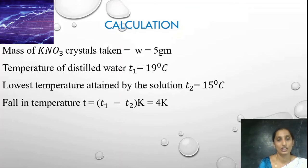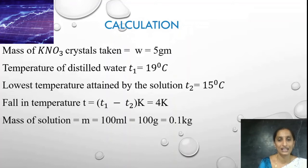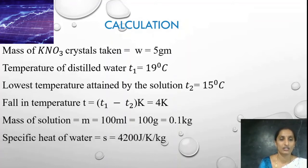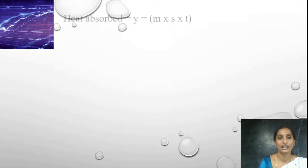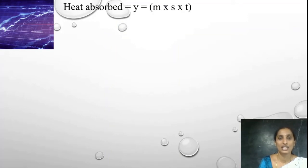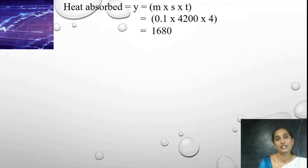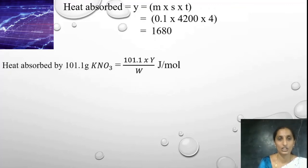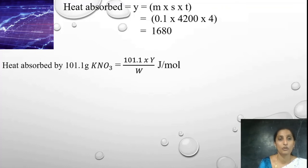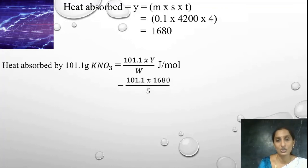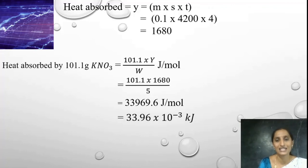Mass of solution M = 0.1 kg, as we have taken 100 ml of water. Specific heat of water S = 4200 joules per Kelvin per kg. Using the formula: heat absorbed Q = M × S × T, substituting the values we get Q. As we have taken only 5 grams, we need to calculate for 1 gram equivalent mass. The molecular mass of potassium nitrate is 101.1 grams. So heat absorbed by 101.1 grams of potassium nitrate = (101.1 × Q) / W. Substituting the values, we get 33,969.6 joules per mole, which is 33.96 kJ per mole.